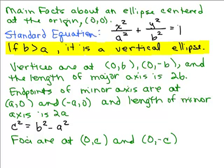So now I'm writing the same equation, and now I'm going to say b is the bigger number. So what if b is bigger than a? It's a vertical ellipse. So the vertices are on the y-axis. So we have (0,b), again we're taking the number under the y, (0,b) and (0,-b). So the length of the major axis is 2 times b, 2 times the bigger number. The endpoints of the minor axis are at (a,0) and (-a,0), so the length of the minor axis is 2a.